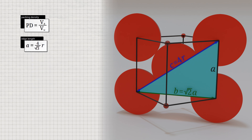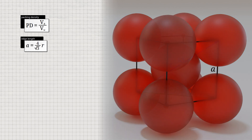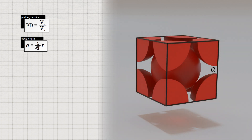We will use this relationship to determine the volume of the unit cell as a function of the atomic radius. First, however, we consider how many atoms there are in total within the cubic unit cell. There is a whole atom in the center of the cube. In addition, the unit cell contains a total of 8 corner atoms, each with one eighth of its volume. Consequently, the unit cell contains a total of 2 atoms. The volume of an atom is determined by the volume of a sphere: 4/3 times π times R³. Thus, the atomic volume of 2 atoms corresponds to a total of 8/3 times π times R³.